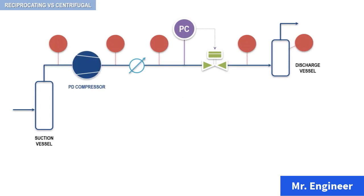The red circles that you can see here represent pressure gauges. For this example, let's consider the following set of initial pressures. The suction pressure of the compressor is set at 20 psi. The pressure downstream of the valve is at 110 psi. The pressure of the discharge vessel is at 100 psi. The pressure upstream of the valve is set at 135 psi. And finally, the discharge pressure of the compressor is at 140 psi.